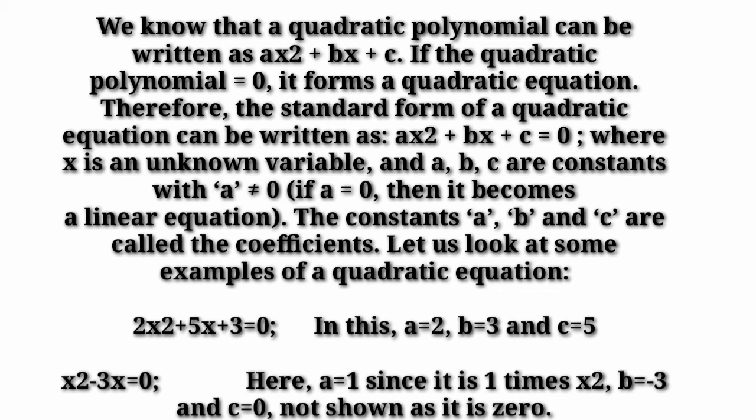Let us look at some examples of quadratic equations. For the equation 2x² + 5x + 3, comparing with ax² + bx + c, the value of a is 2, value of b is 5, and the value of c is 3. Similarly, for x² − 3x = 0, we can express this as x² − 3x + 0, so the value of a is 1, value of b is −3, and value of c is 0.